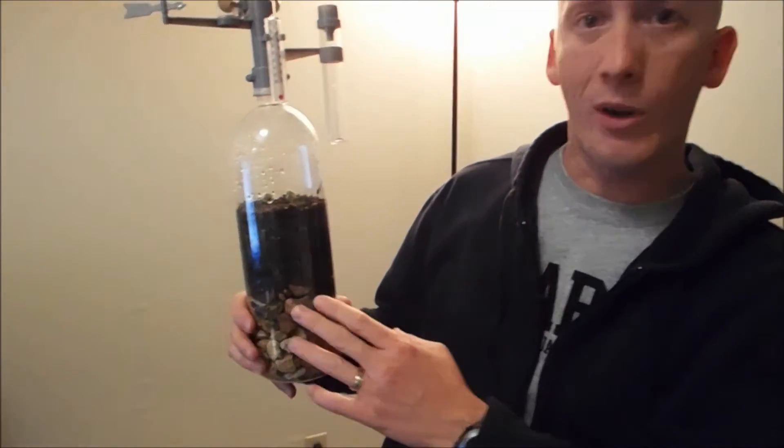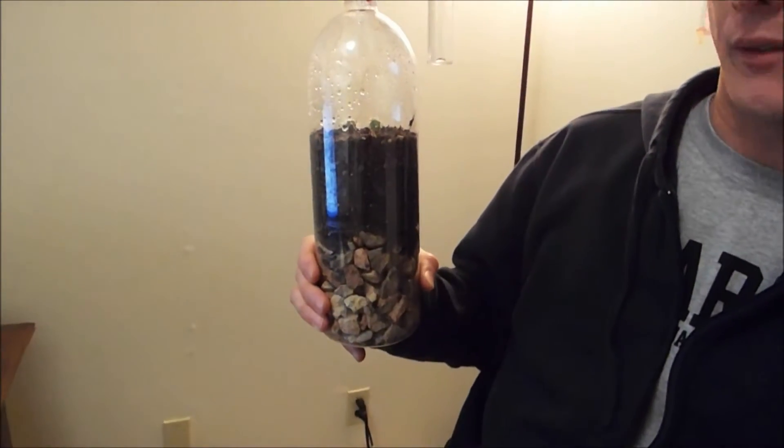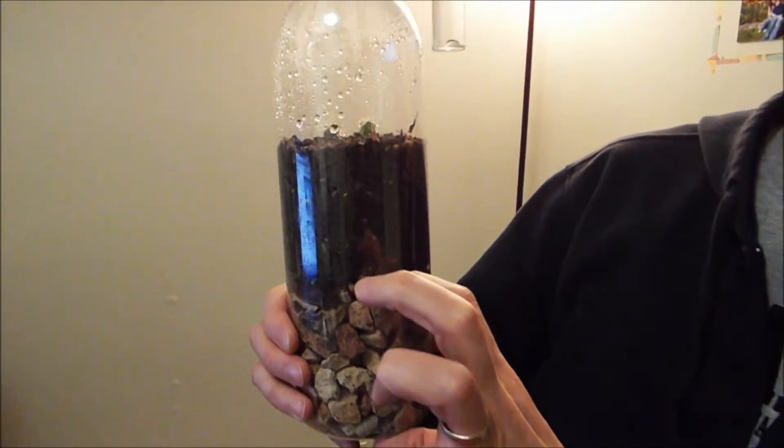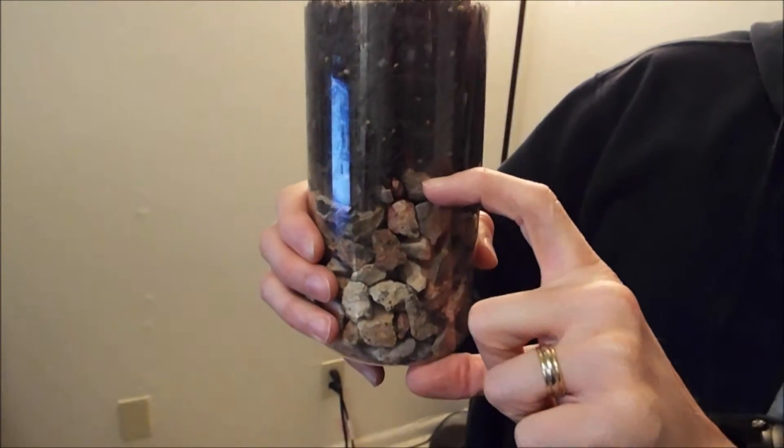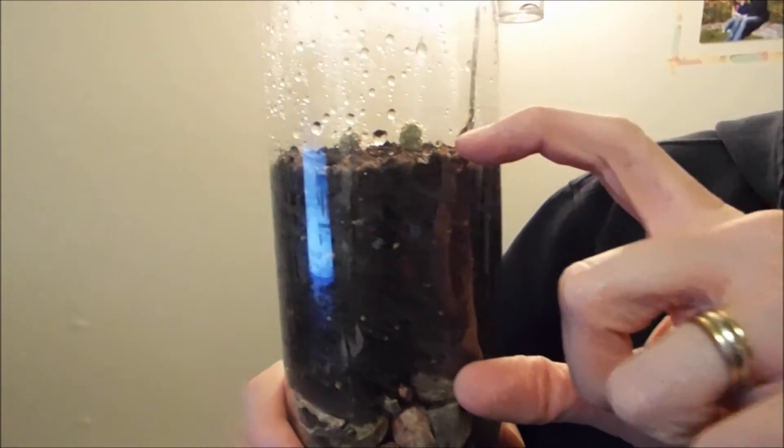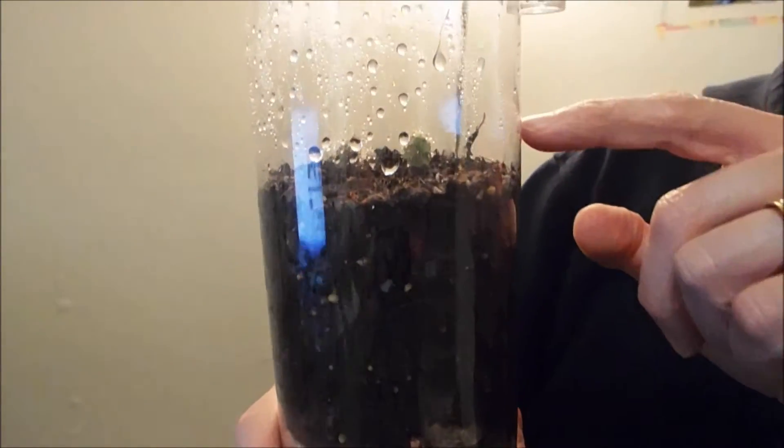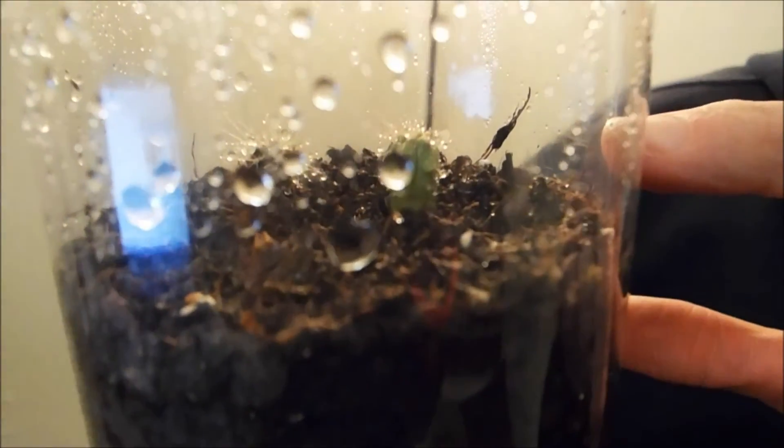So we went out and got one of these Smartwaters, it's a 1.5 liter, and we've put about this much rocks in it, and then we've got about this much dirt, and then we've got two, this time we put two of them in here, cacti.